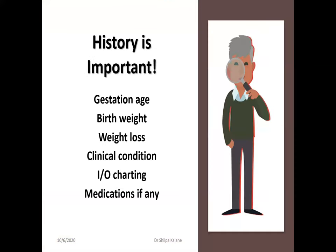Assessing fluid status requires a thorough history — knowing the gestational age, birth weight, amount of weight loss, baby's clinical condition, any underlying illness, urine output, fluid intake, and medications like furosemide or aldactone that can affect fluid balance. Clinical signs are not very sensitive indicators in neonates — altered skin turgor, sunken anterior fontanelle, and dry mucous membranes are not sensitive indicators of dehydration. Babies manifest tachycardia, hypotension, and metabolic acidosis only with moderate to severe dehydration.